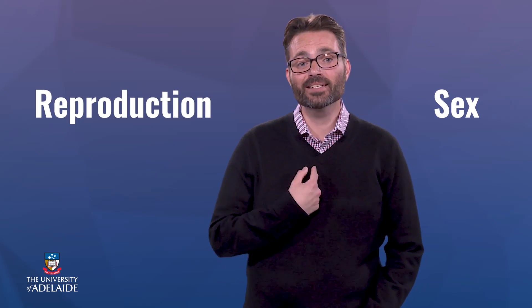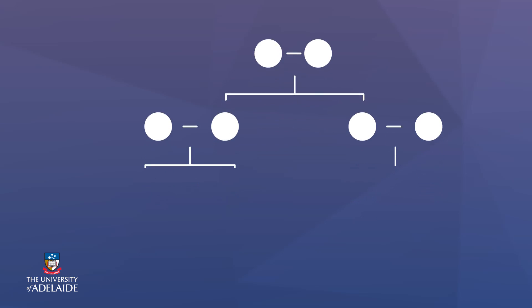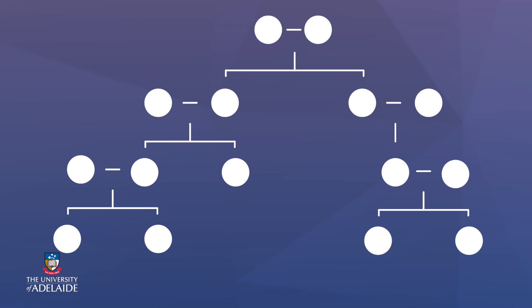Reproduction in humans involves sex. But what do these words sex and reproduction actually mean? Is my understanding of these terms the same as yours? In science, reproduction is the biological process by which new individuals, called offspring, are produced from parents. Reproduction is a fundamental feature of all life, but not all reproduction is the same.